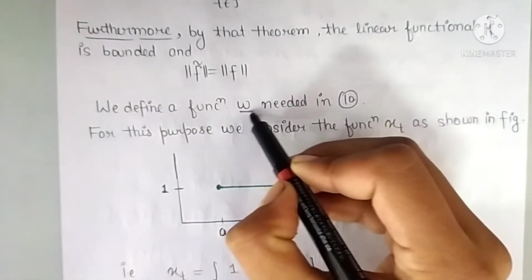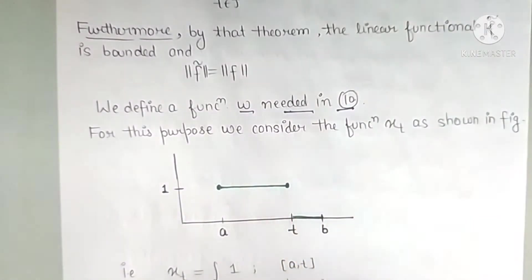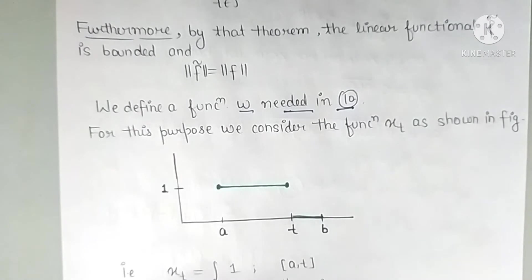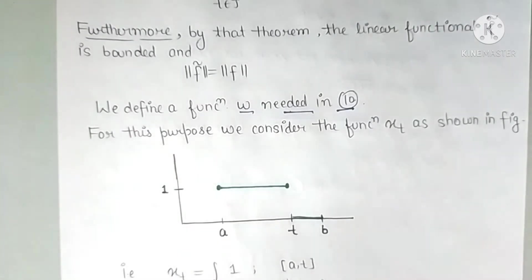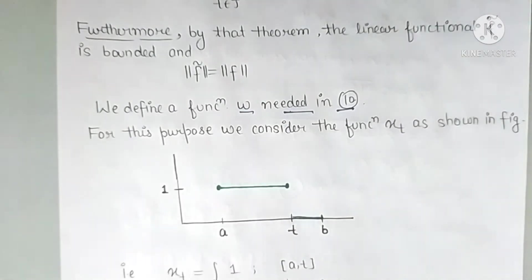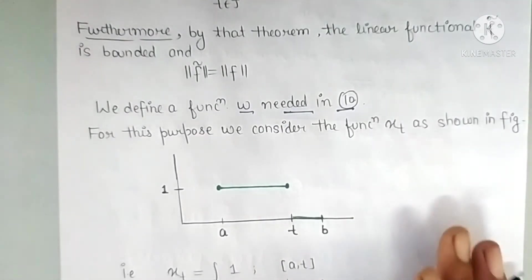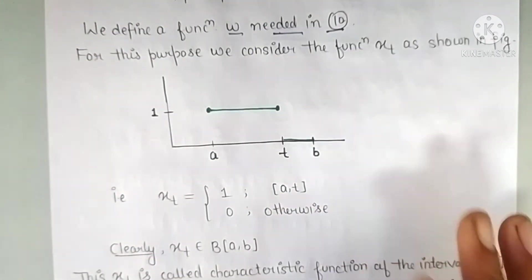To define w, we first define a function x_t. We need w because it appears in equation 10 that we must prove. Using x_t and the linear extension F̃, we will define w. First define x_t, then define w.